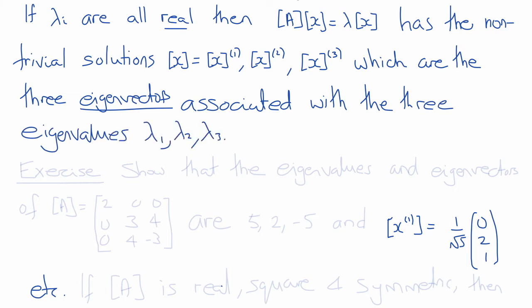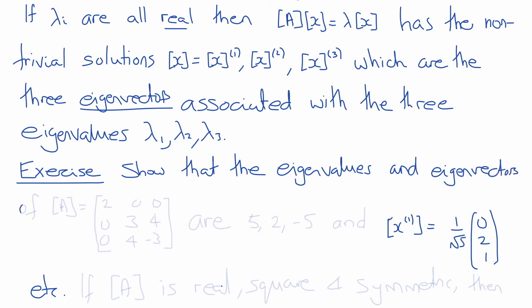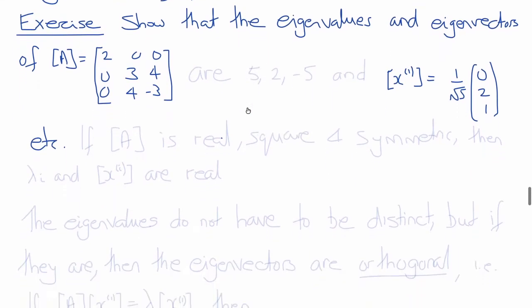As an exercise, refresh your memory about eigenvalues and eigenvectors by solving this problem: find the eigenvalues and eigenvectors of the matrix A with components [2, 0, 0; 0, 3, 4; 4, 4, -3]. It's easy to show that the eigenvalues are 5, 2, and negative 5. The first eigenvector is 1 over root 5 times [0, 2, 1] — I'll let you work out the other two. Note we divided the components 0, 2, 1 by the square root of 5 to normalize the eigenvector, which is conventional.